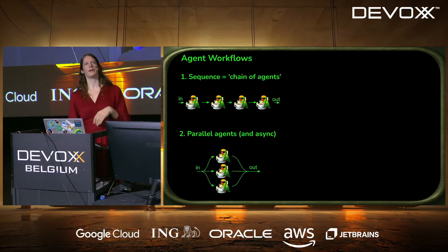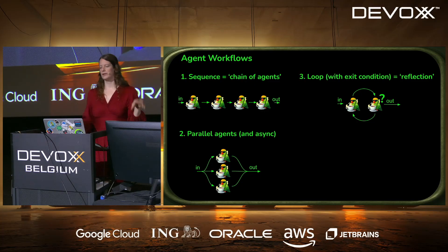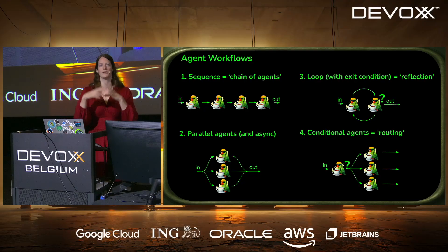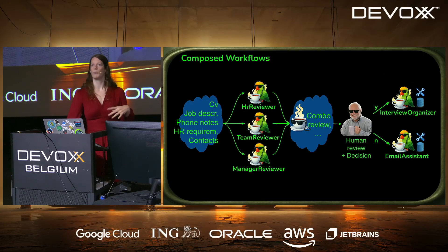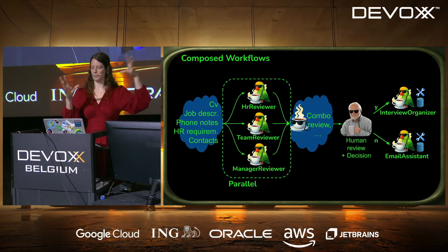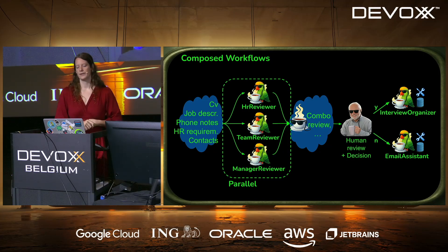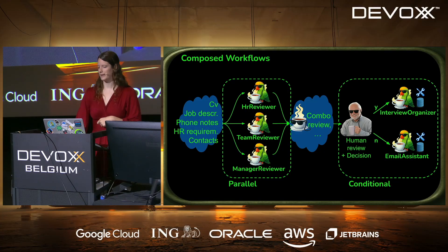Beyond sequences, we have agents that run in parallel with async support, loop agents that execute until an exit condition or max iterations is reached, and conditional agents that execute one or more other agents based on a predicate. This allows complex composed workflows — for example, a hiring workflow with three parallel reviews, then a non-AI combining step, then a human-in-the-loop to validate the AI's hire/no-hire decision, followed by an AI agent that organizes an interview or sends a rejection email.